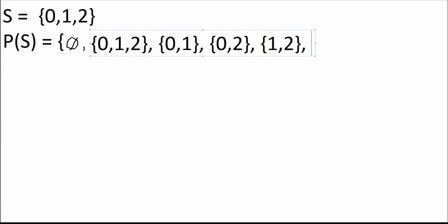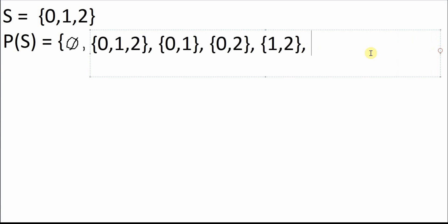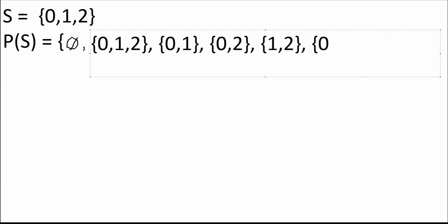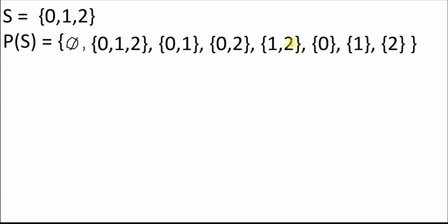The last step: since we did subsets of three and subsets of two, now we do subsets of one. All that means is writing down each element as its own set. So we write down zero as its own set, one as its own set, and finally two as its own set. And you are finished — that is the power set of S.